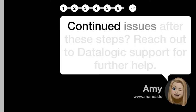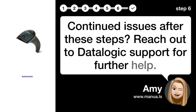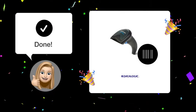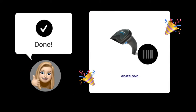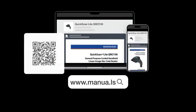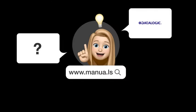Step 6: Contact Support. If you still have issues after these steps, reach out to DataLogic Support for further help. By following these steps, you should be able to get your DataLogic QuickScan Lite QW2100 recognized by your Windows PC with ease. Still need help? Visit our website for the complete manual, where you will also find questions and answers from other DataLogic users.